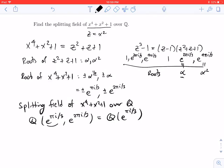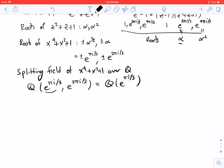This could be enough, but let's write it even simpler. We know that e to the πi over 3 is cosine of π over 3 plus i sine of π over 3. Cosine of π over 3 is 1/2, sine of π over 3 is √3 over 2, so this is 1/2 plus √3 over 2 i.